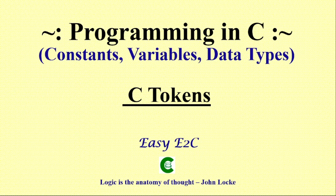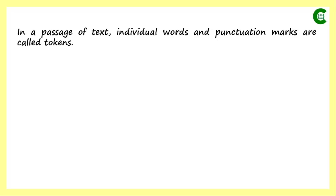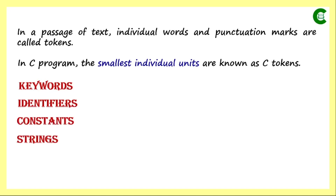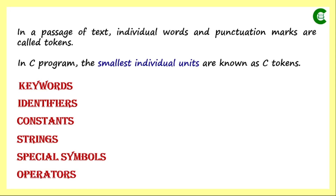In today's class we will learn C tokens. We know that in a passage of text, the individual words and the punctuation marks that we use are called tokens. A similar approach we have in programming language also. In a C program, the smallest individual units that we write and use in our programs are known as C tokens. In C language, we have six types of C tokens: keywords, identifiers, constants, strings, special symbols, and operators.